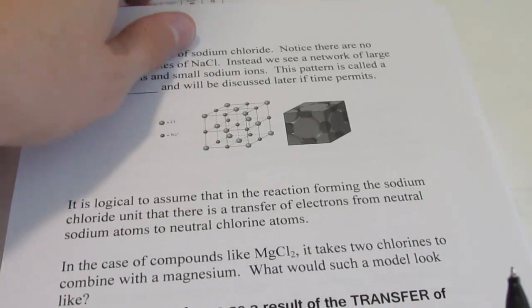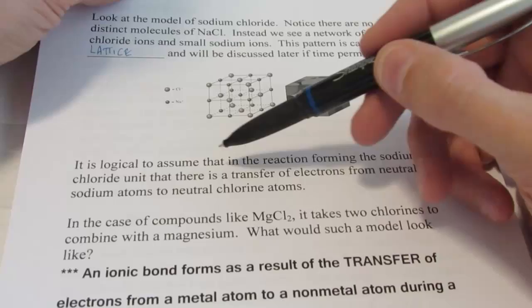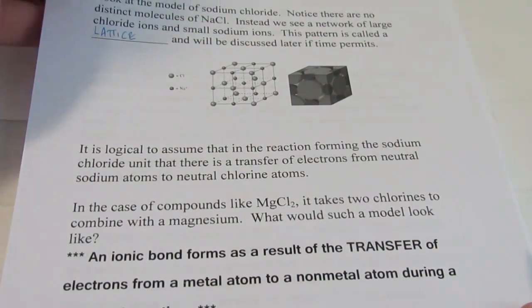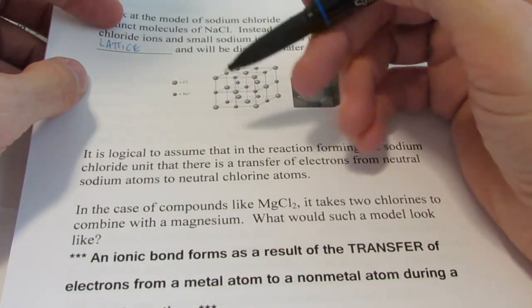It's logical to assume that in the reaction forming sodium chloride, there's a transfer of electrons from neutral sodium to neutral chloride ions. Remember, sodium has 11 electrons. That's not a stable configuration.